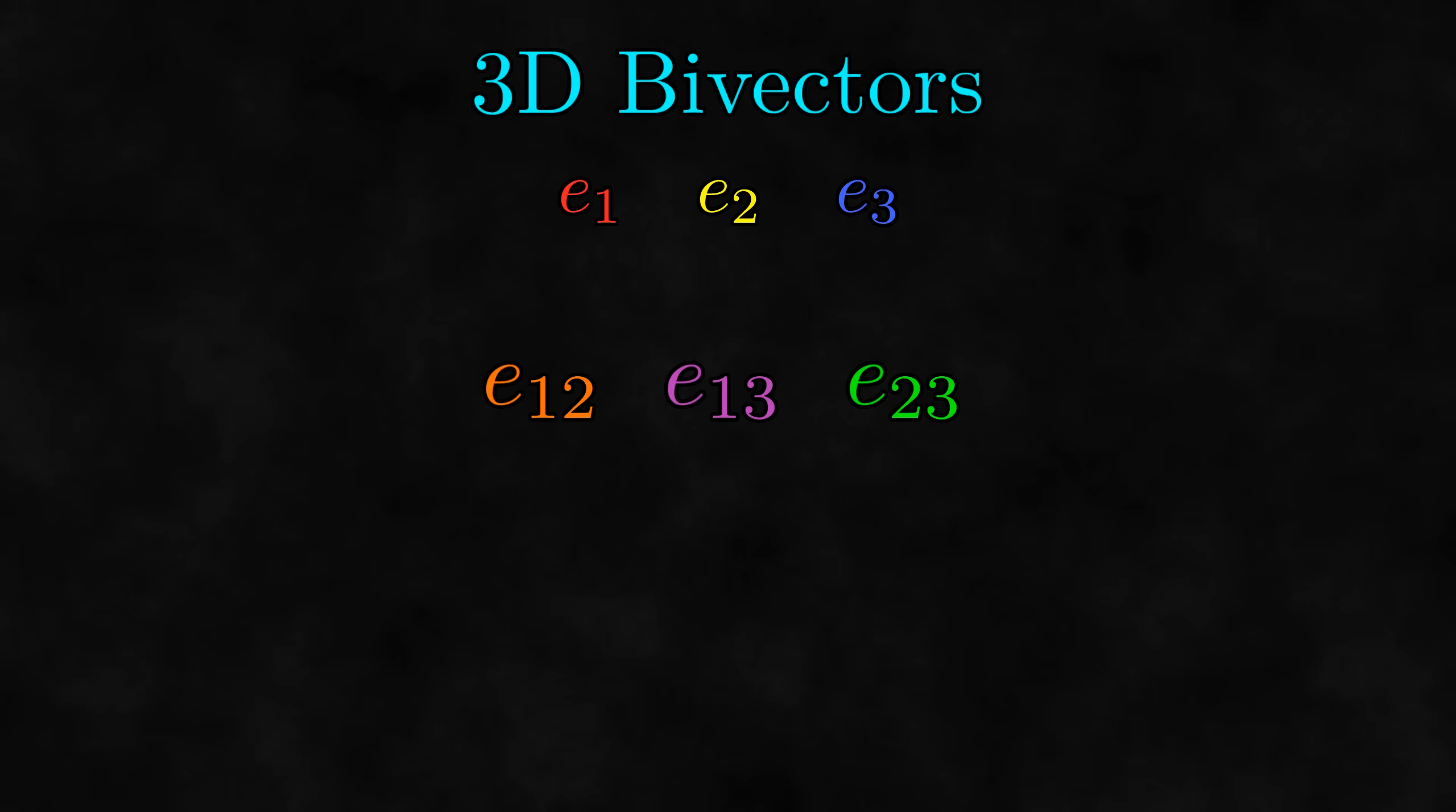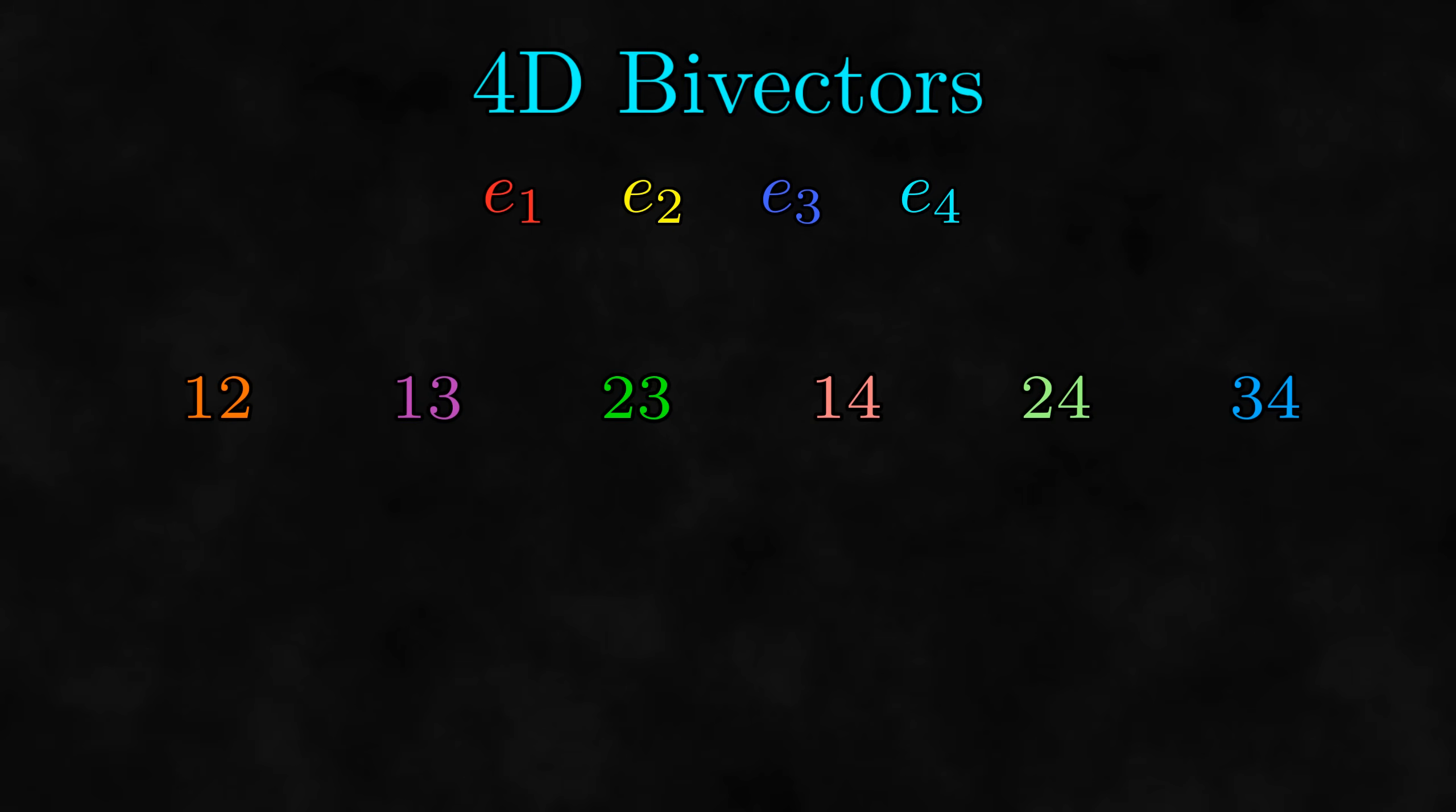We can do the same thing in four dimensions. In four dimensions, we have four basis vectors to build our bivector basis from. There are six ways to pick two things from four things, so we have six basis bivectors in four-dimensional space.